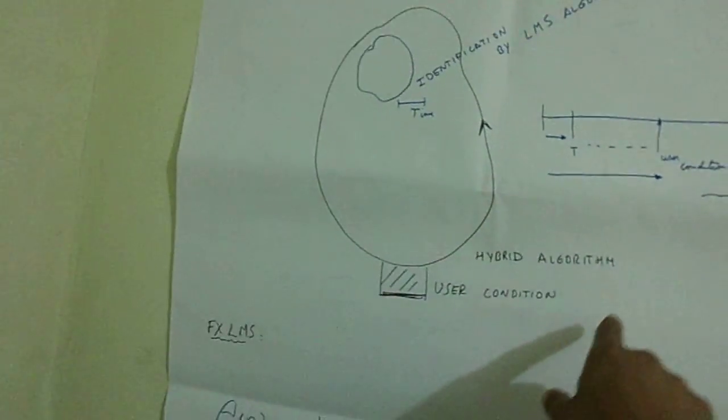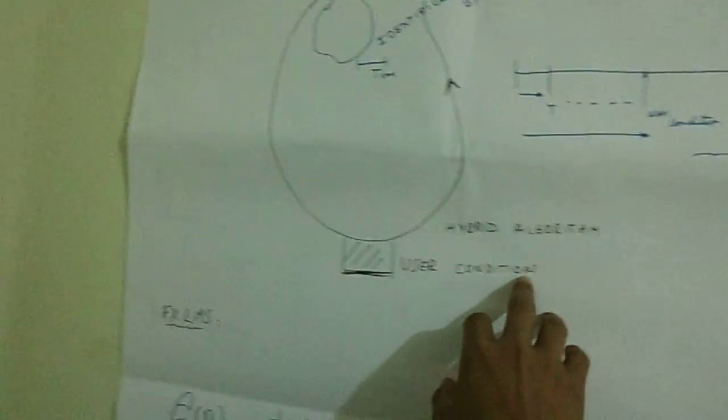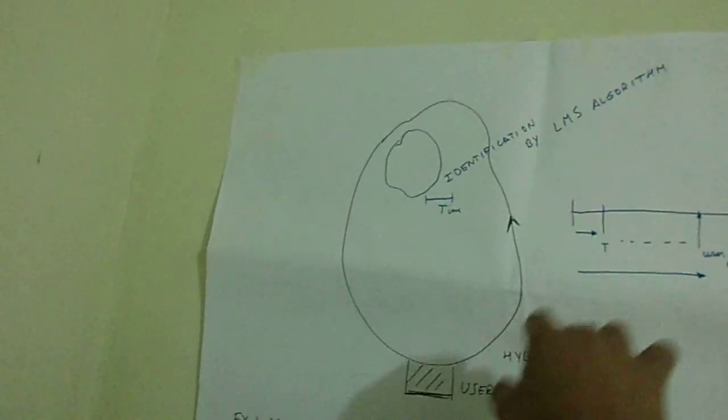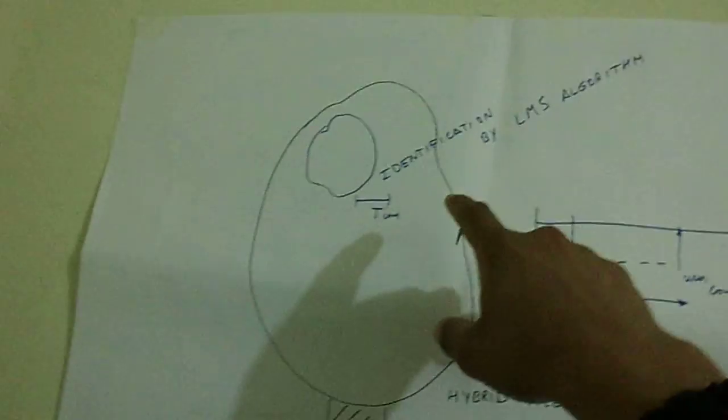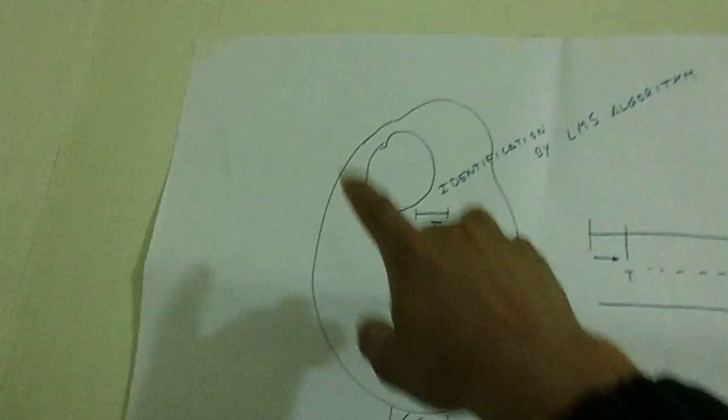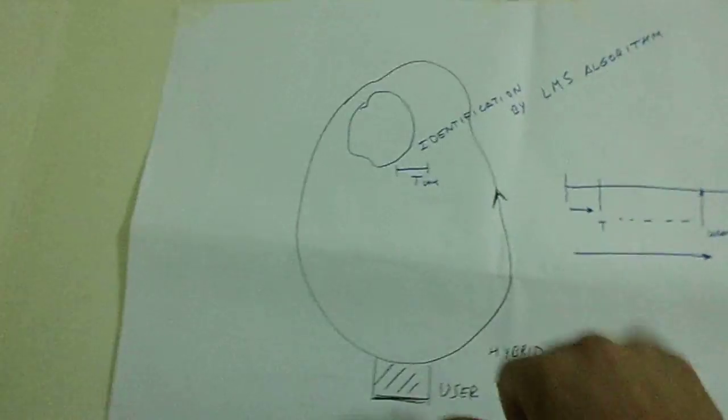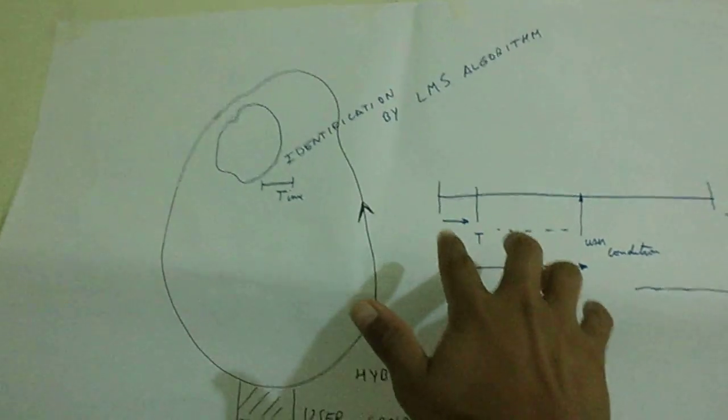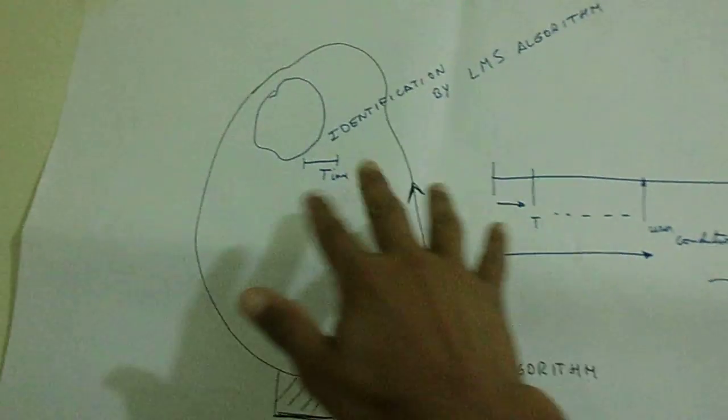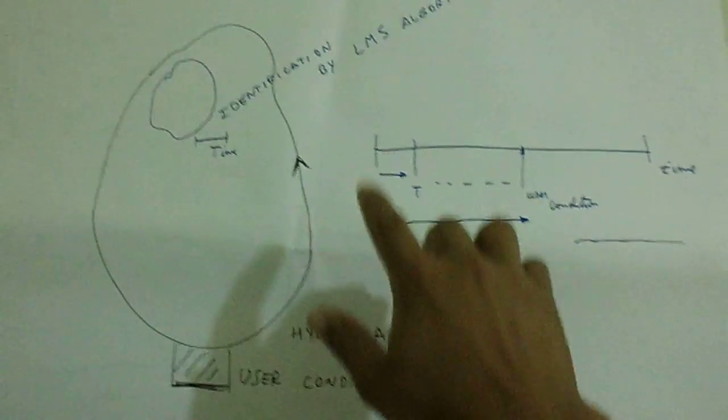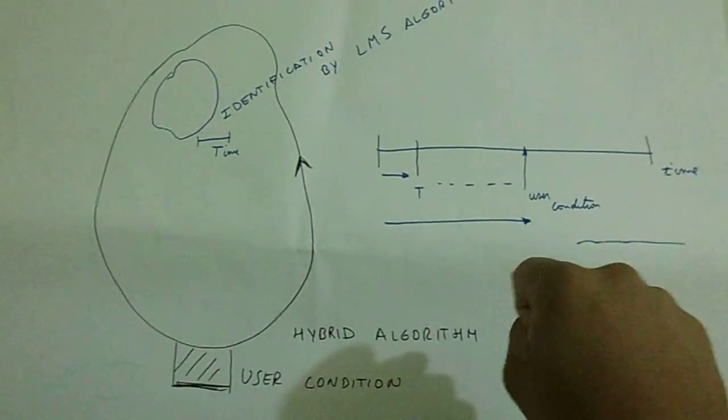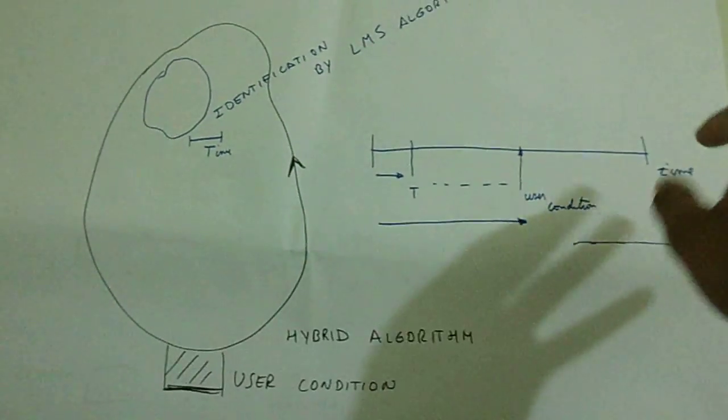It depends on user conditions. This is a representation of the algorithm executed. The identification by LMS algorithm is inside the control loop, and the time which the LMS needs to be executed is inside the time conditions. This is the time direction.